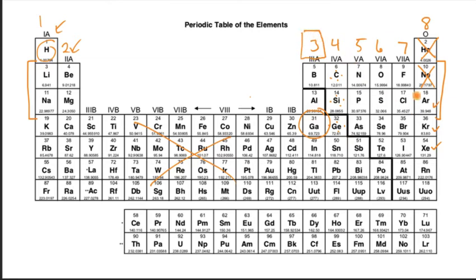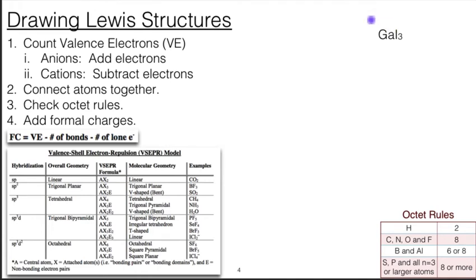And then the iodine is here and it has a valence electron count of seven. Let's apply that. I got one gallium with three valence electrons. Each iodine has seven, there are three, so this is 24. Twenty-four valence electrons.